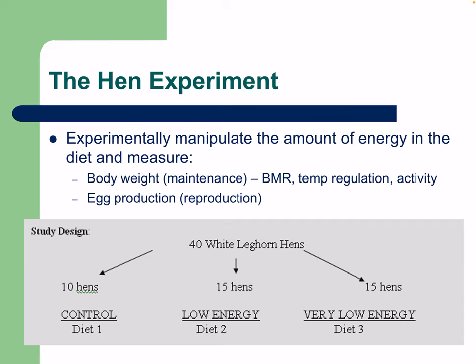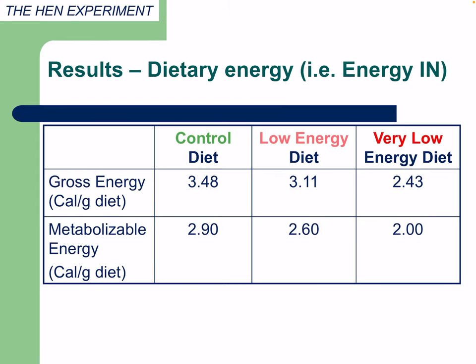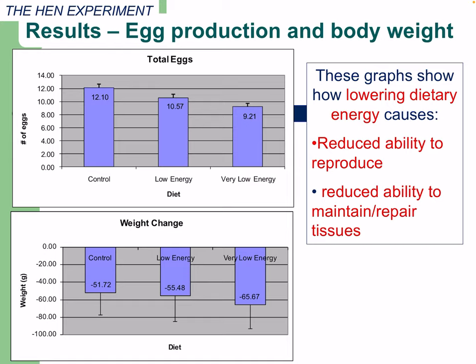An example is the hen experiment, where they manipulated dietary energy and measured body weight, basal metabolic rate, temperature regulation, activity, and egg production. Forty White Leghorn hens were split into a control group, a low energy group, and a very low energy group. The results showed that lowering dietary energy caused reduced ability to reproduce and reduced ability to maintain and repair tissue — similar to what we see in starving or anorexic humans, where cellular functions fade and tissue damage accumulates.